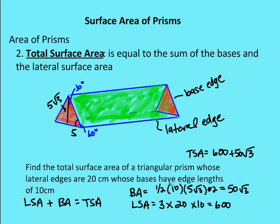So the total surface area is the base area of 50√3 — the area of two triangles — plus the lateral surface area of 600 — the area of three rectangular faces — giving a total surface area of 600 + 50√3 centimeters squared.